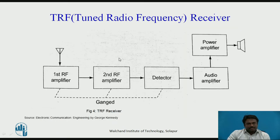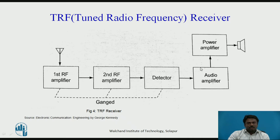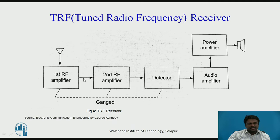The second receiver is the TRF receiver. This is the block diagram of the tuned radio frequency receiver. As you can see, there are multiple stages: the antenna, first stage RF amplifier, second stage RF amplifier, detector, audio amplifier, power amplifier, and the loudspeaker. Between the antenna and the detector there can be n number of RF amplifiers; for convenience we have used only two stage RF amplifiers here.